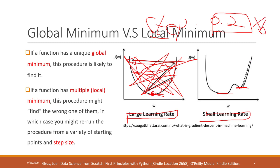However, if the step size is too small, we move only a very little bit each time. Once we reach a local minimum, we will not get out of it. So we should not choose the step to be too small. We need to find an ideal step size that helps us reach the global minimum while avoiding getting trapped in a local minimum.